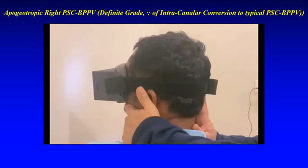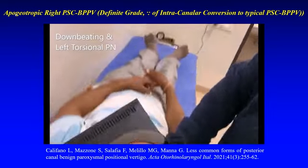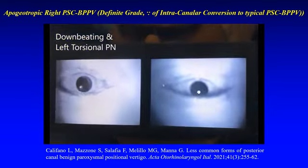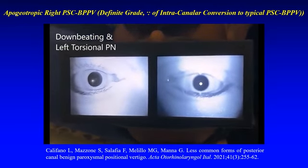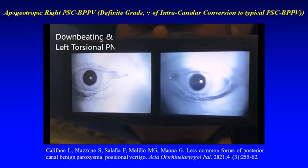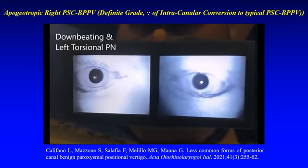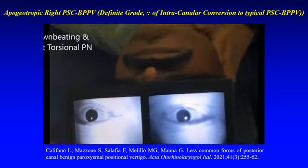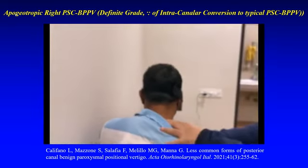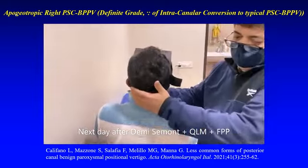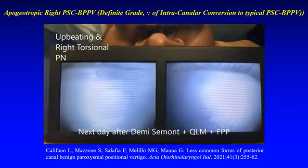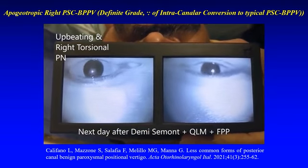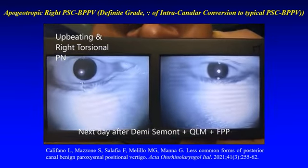This is a 35-year-old male with history of positional vertigo for the past three to four days. On left Dix-Hallpike position he elicits a downbeating left torsional nystagmus. The patient was subjected to multiple Demi-Semont maneuvers, a few quick liberatory maneuvers of Gufoni, and was sent home to lie in the left lateral recumbent position with nose down — the fourth prolonged position of Vannucchi 2015. The next day he returned and was subjected to the enhanced head hanging position, which elicits an upbeating right torsional nystagmus — an intracanalar conversion to typical posterior semicircular canal BPPV.